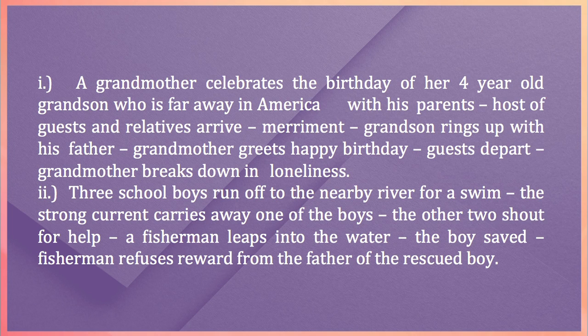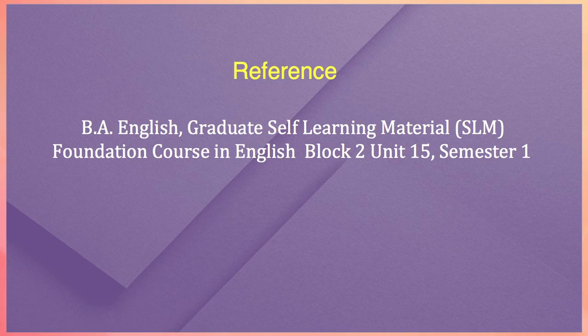Here's the second outline: Three school boys run off to the nearby river for a swim. The strong current carries away one of the boys. The other two shout for help. A fisherman leaps into the water. The boy is saved. Fisherman refuses reward from the father of the rescued boy. You have to complete these outlines of the stories using your own imagination and creativity. Here's a reference: I hope you'd go through the BA English Graduate Self-Learning Material (SLM), or Foundation Course in English, Block 2, Unit 15, Semester 1.